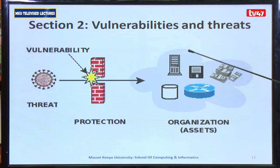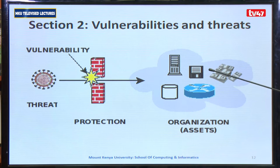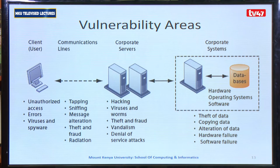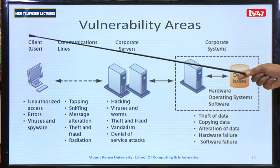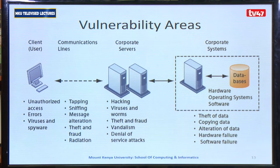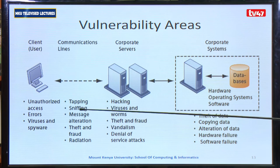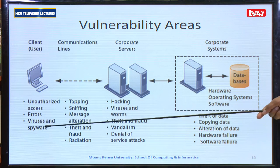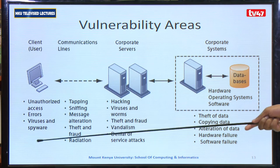An organization's resources may include hardware, saved information, databases, or even the money within the institution. When you talk about vulnerability areas, it may occur at four levels. Level one is what we call the user. When the user is compromised, the vulnerabilities include unauthorized access to the system, errors which may be caused by the user intentionally or unintentionally, and viruses and spyware that may come in at the level of the client.